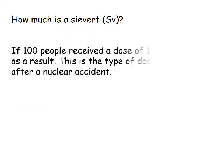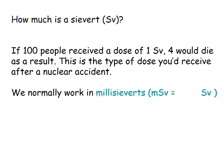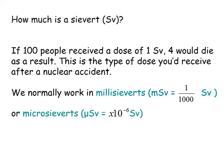How much is a sievert? If 100 people receive a dose of one sievert, four would die — it's the kind of dose you might get after a nuclear accident. So normally we work in millisieverts, which means 10 to the minus 3, or a thousandth of a sievert. We also work in microsieverts, symbol mu, which is 10 to the minus 6 sieverts.